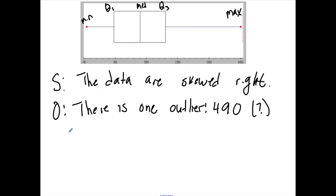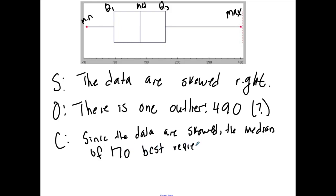Center - now the median is the center and I can see that the median, this going up by 20, this is about 170. So since the data are skewed, the median of 170 best represents the center of the data.